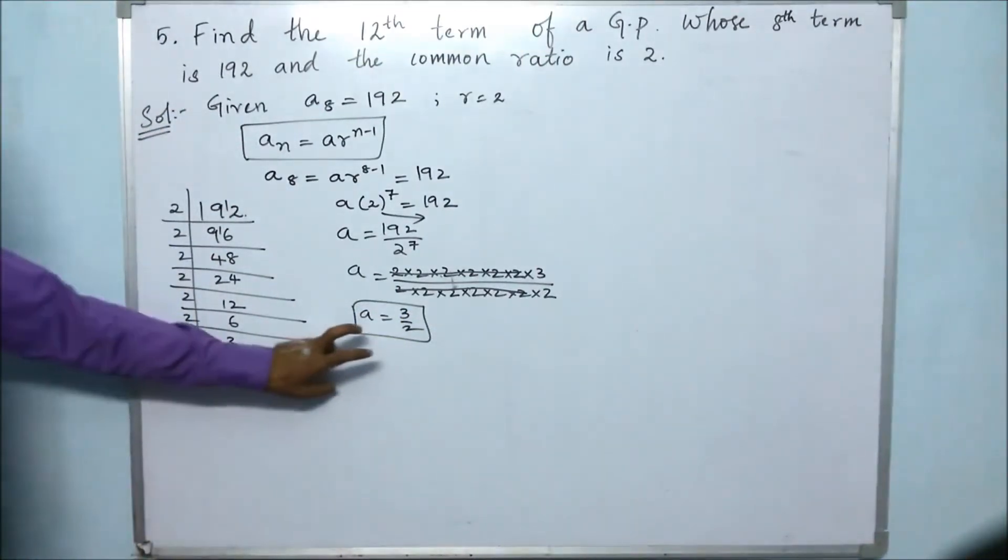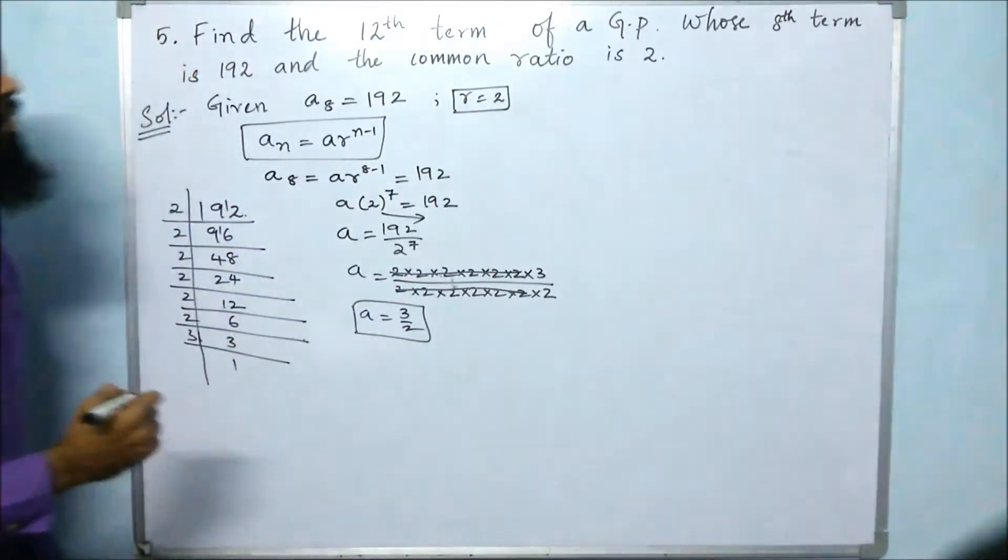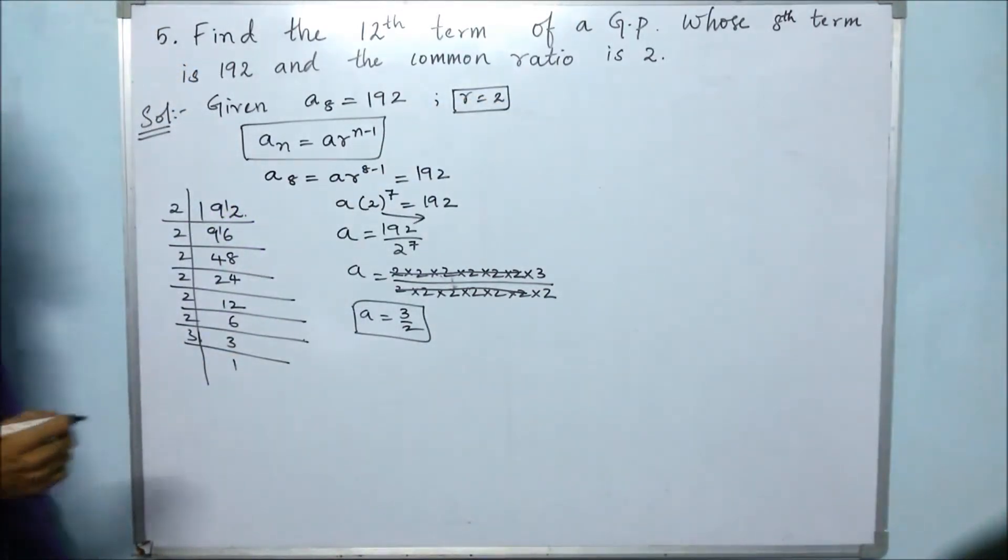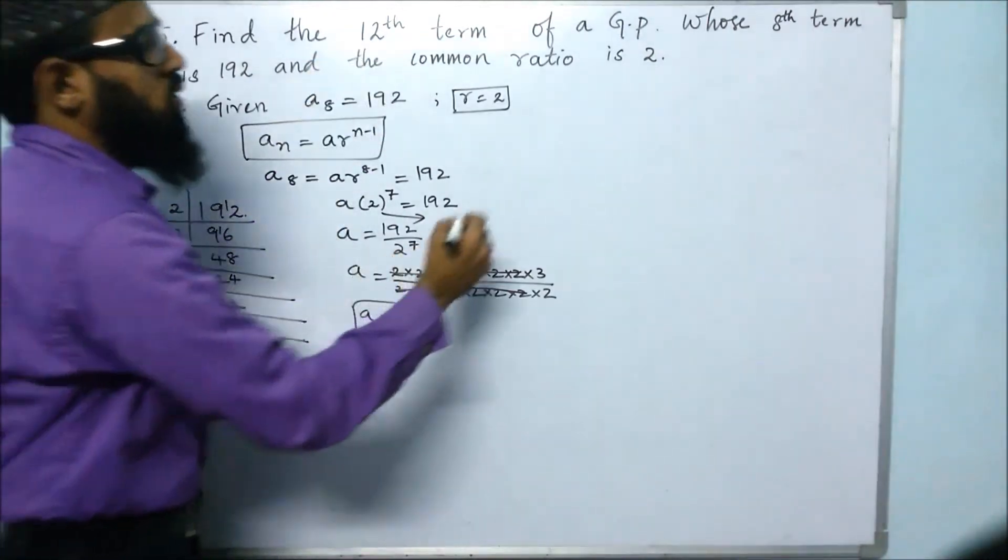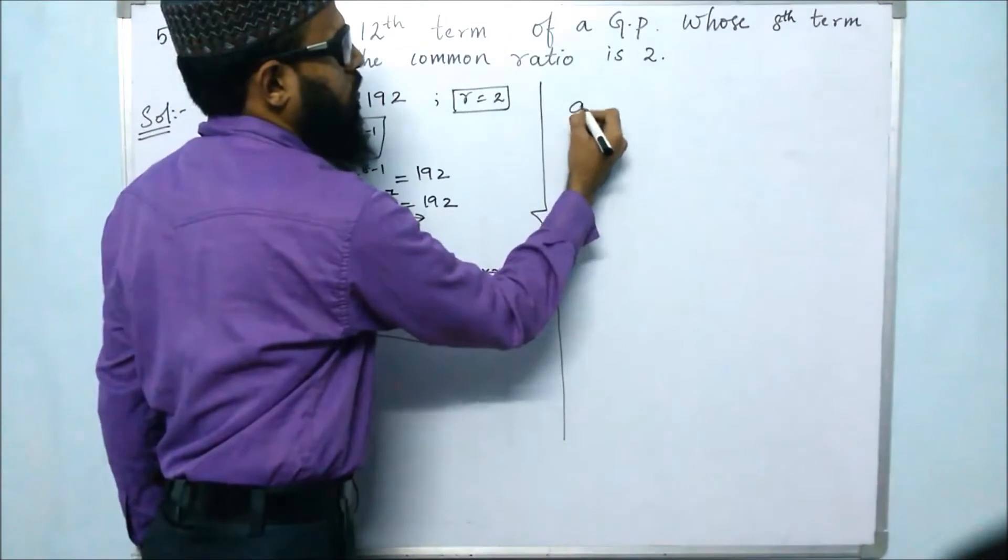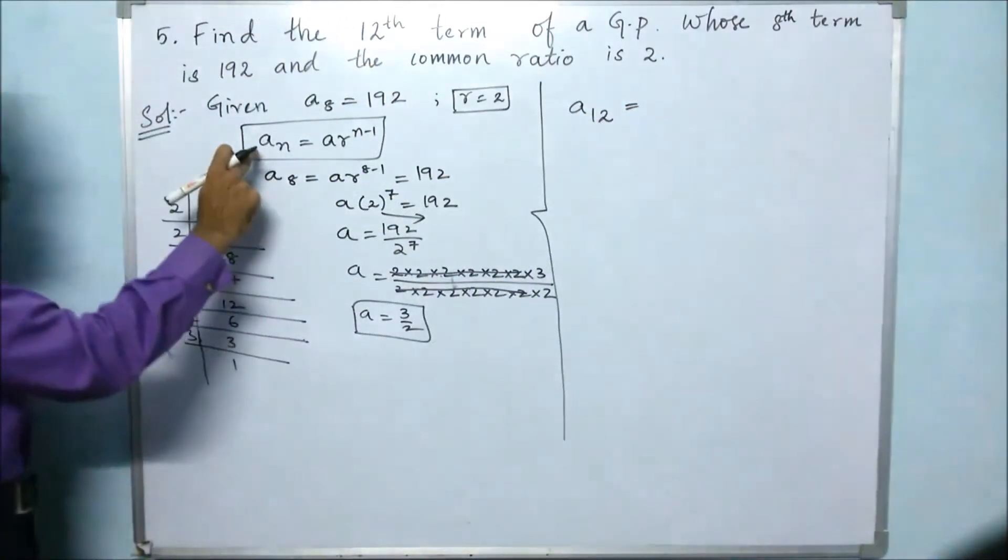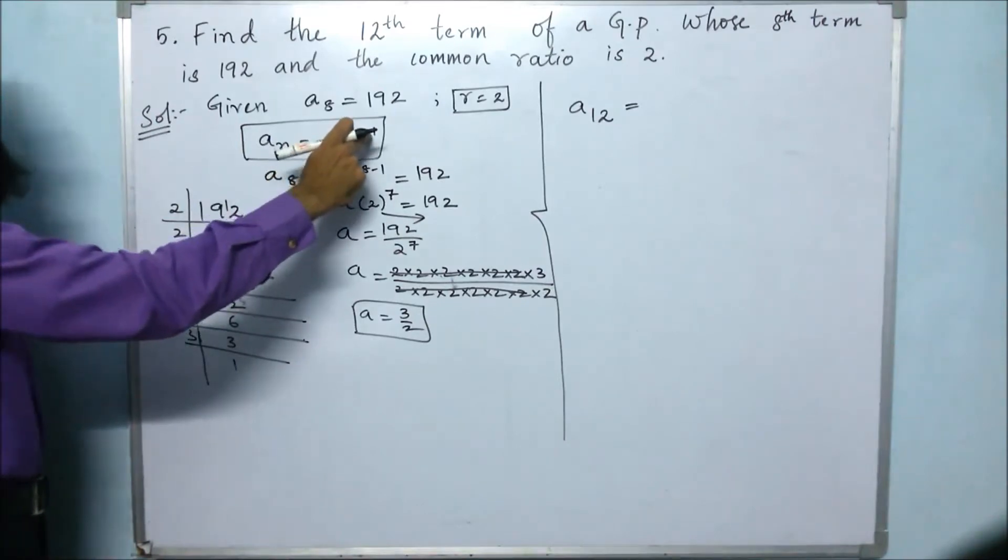Then next, now we are having a and the value of r. It will be easy for us to find the value of a12. So for finding the value of a12, we know that the formula of nth term is an equals a times r to the power of n minus 1.